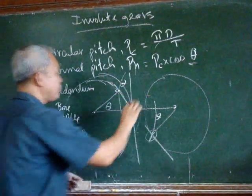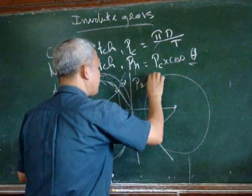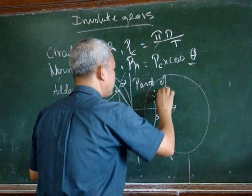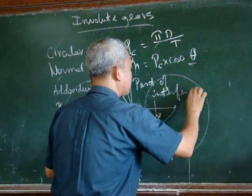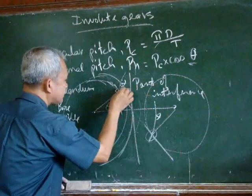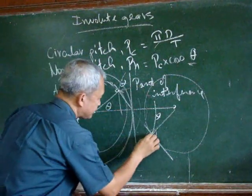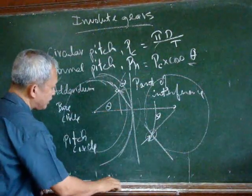And also here the addendum of the circle must not be beyond that point. That point by the way is called the point of interference. So again this is the point of interference and this is another point of interference.